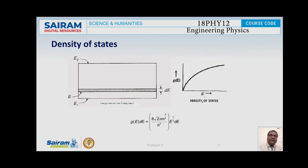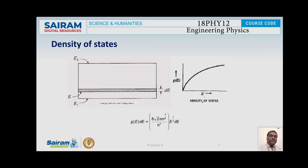In this slide, I am going to explain density of states. Density of states is the number of available electronic states per unit energy range at a given energy E in the valence band of a material of unit volume. Considering an energy band spread between energy levels E1 and E2, the number of energy states in unit volume having energies between E and E+dE is given by: G(E)dE = (8√2 π m^(3/2) / h³) × E^(1/2) × dE. G(E)dE gives the number of available electronic states between energy levels E and E+dE.